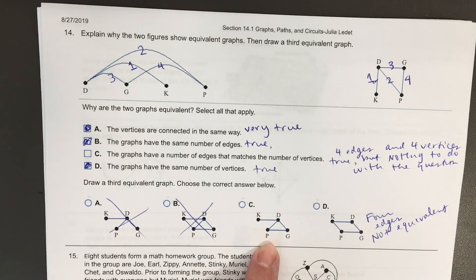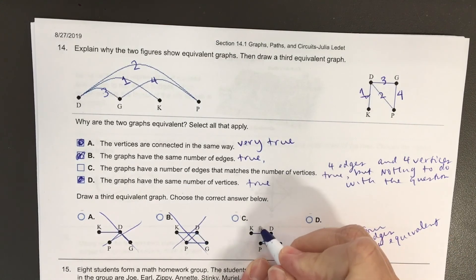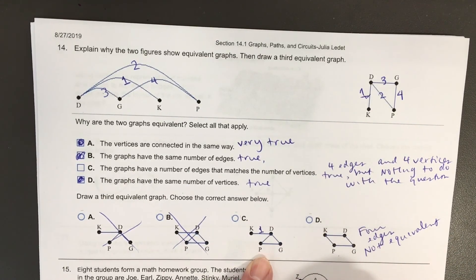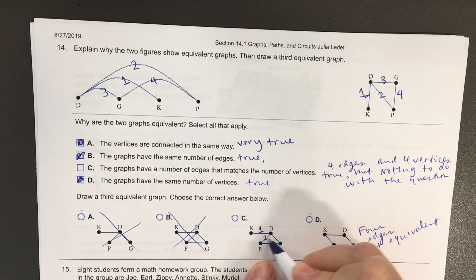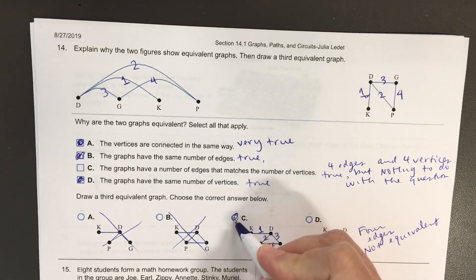Four vertices. The vertices are labeled the same with the same letters. So let's see. My edge number one up here, K to D, I have that one. That's edge one. D to P is edge two. D to G is edge three. And P to G is edge four. There it is. It's C.